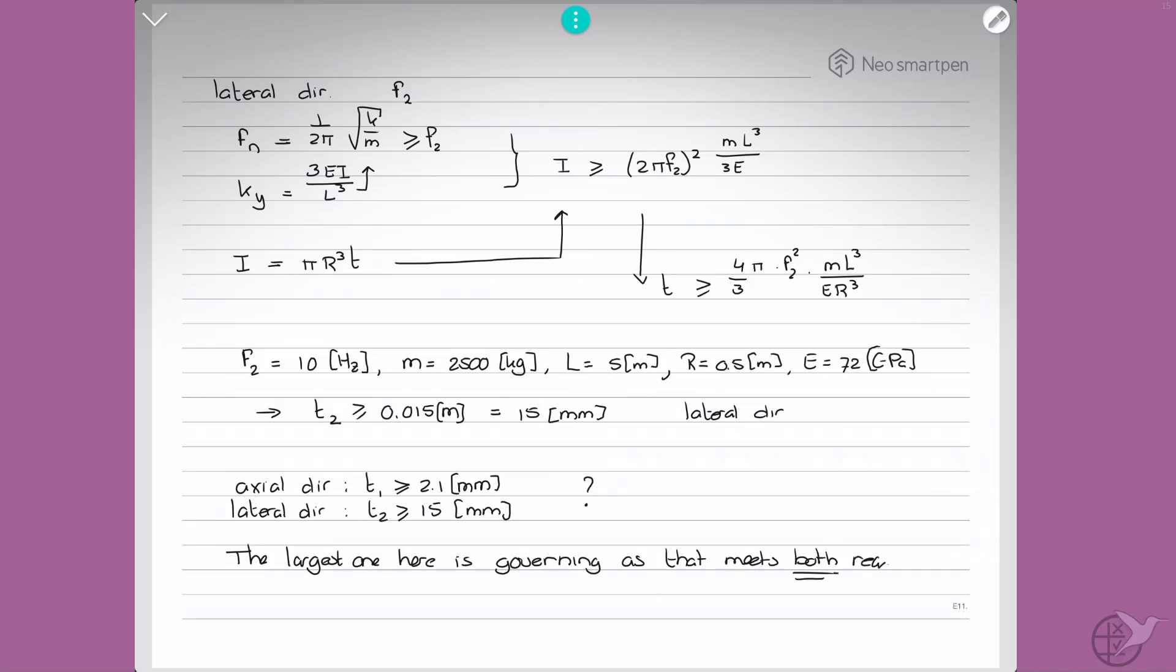The axial one, T1 is 2.1 millimeters, would actually fail the lateral direction requirements. So our minimum required wall thickness Tmin is equal to 15 millimeters. So that's the first half of our problem solved. Now let's go to the second.